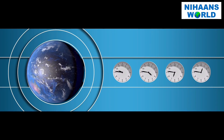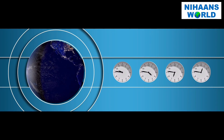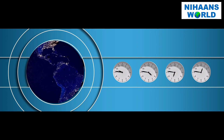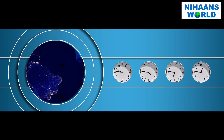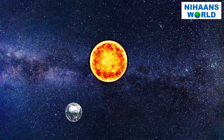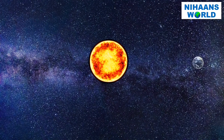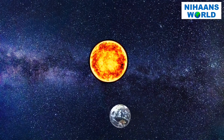At any moment, half of the world is in day time and half is in night time. Now let's get into more details to understand the reason for day and night. Let's look at the position of the earth with reference to the sun to understand this phenomenon.